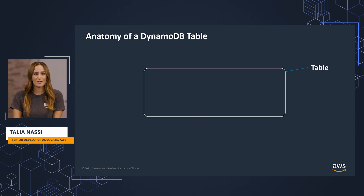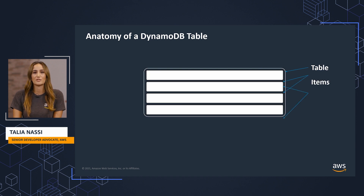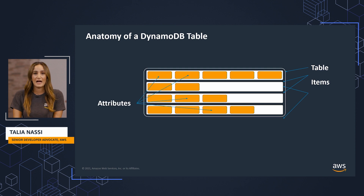The main concept in DynamoDB is a table. Tables are used to store data, and a table is made up of items. Items have attributes, one of which can be a primary key.